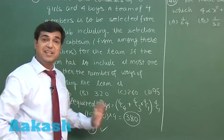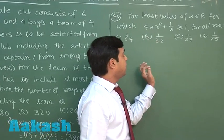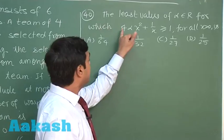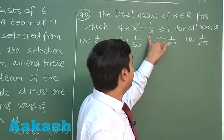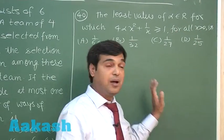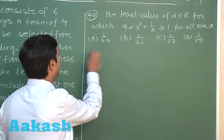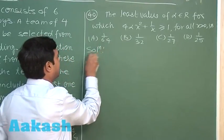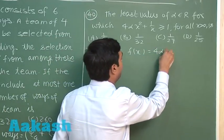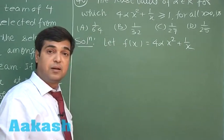Let's move to question number 40. Find the least value of alpha from the set of real numbers for which 4αx² + 1/x ≥ 1 for all x > 0. This is a simple application of derivatives question. Let there be a function f(x) = 4αx² + 1/x.